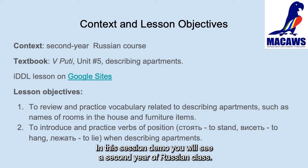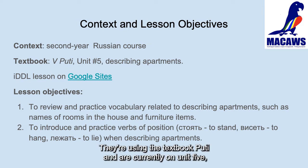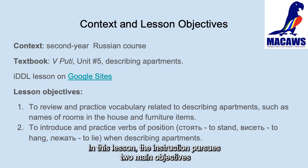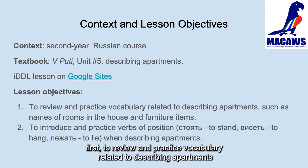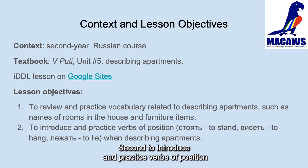In this teaching demo, you will see a second-year Russian class. They are using the textbook В пути and are currently on Unit 5, which deals with describing living spaces. In this lesson, the instruction pursues two main objectives: first, to review and practice vocabulary related to describing apartments, such as names of rooms and furniture items; and second, to introduce and practice verbs of position.